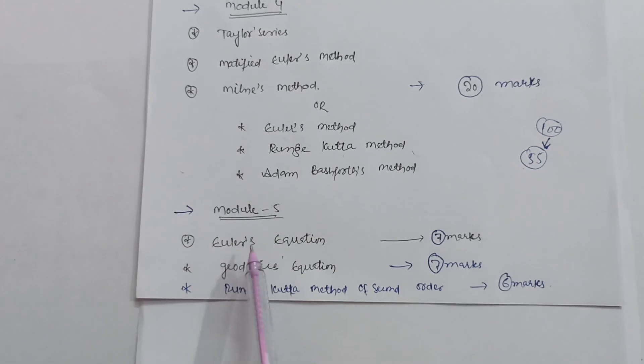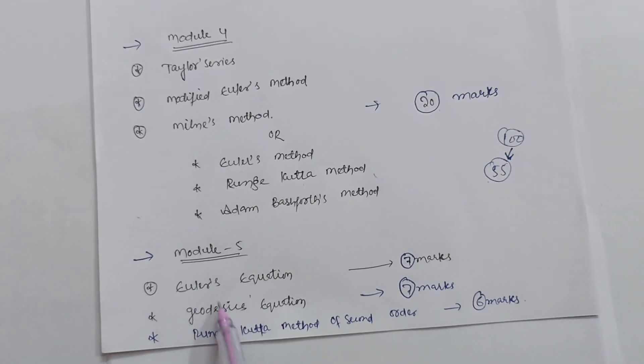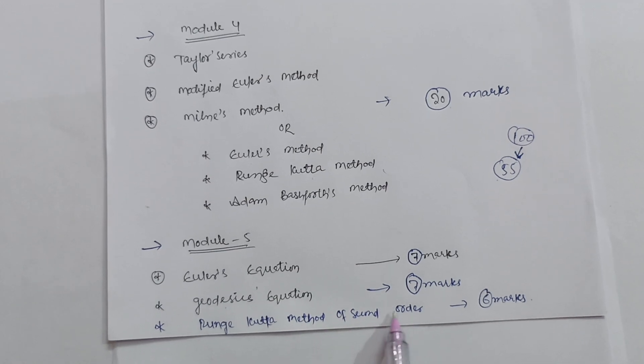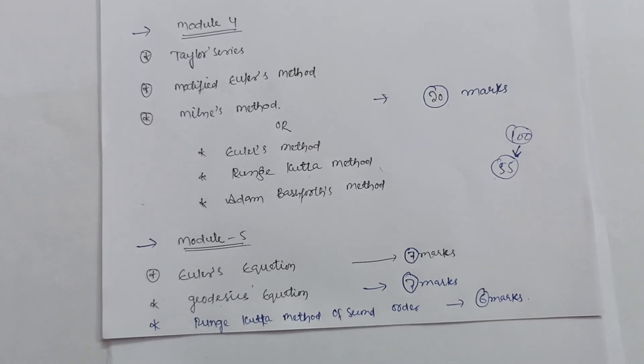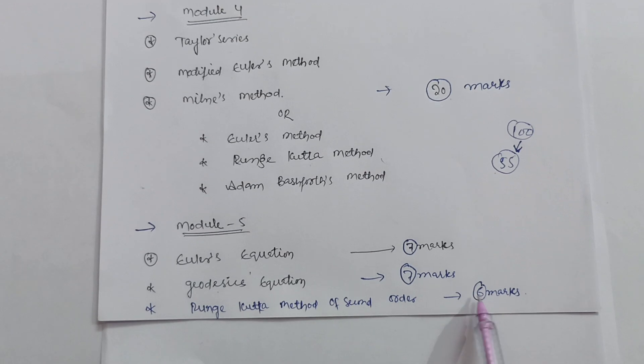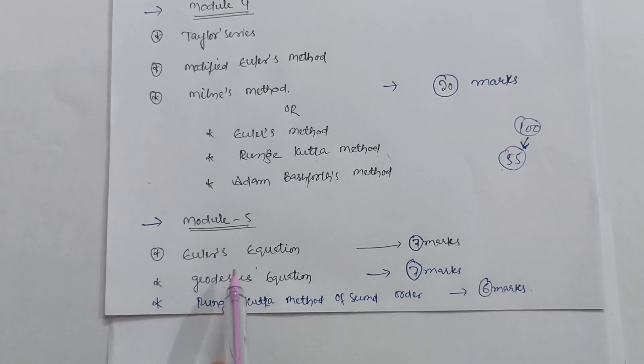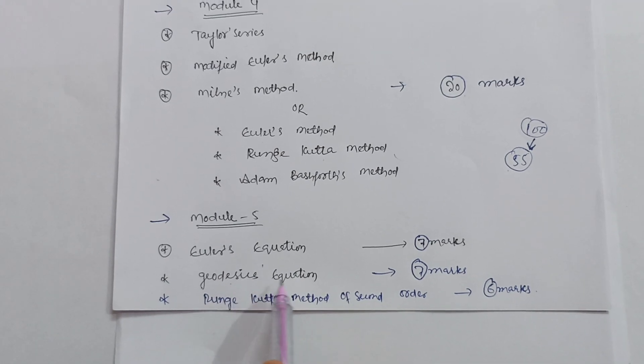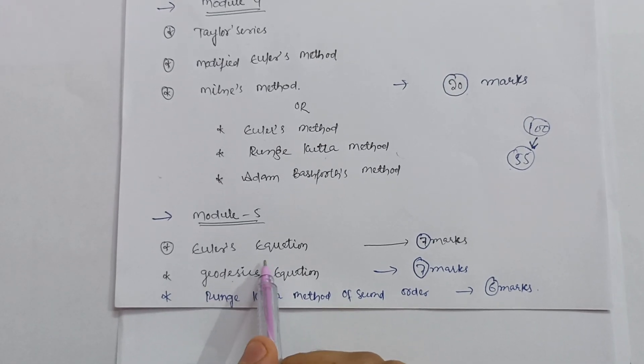Then after, module fifth comes. In that particular module there are three topics. First topic is Runge-Kutta Method of second order. This is the definite question which is most asked in VTU examination. This carries 6 marks. Then apart from these, Euler's Equation and Geodesics Equation, these two parts they will tell you in R part.